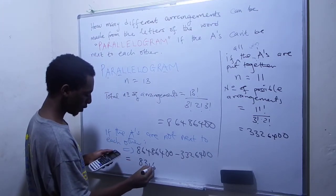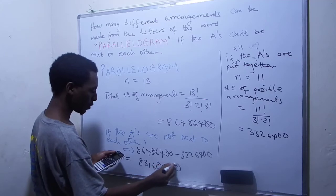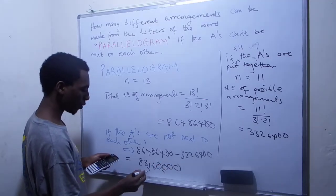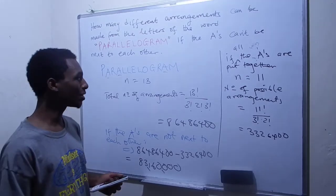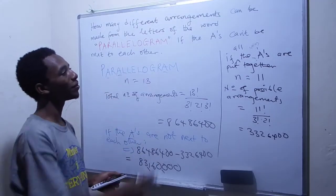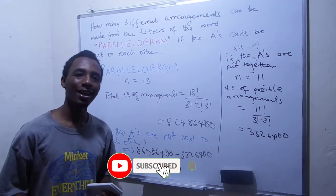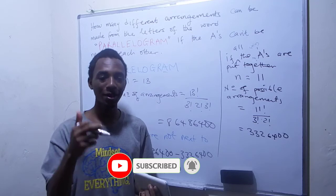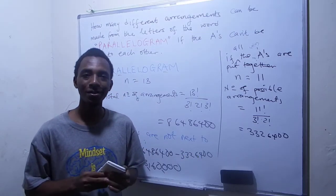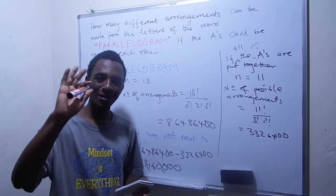Which is 8, 3, 1, 6, 0, 0, 0, 0. So there we go. That's 83,960,000 possible arrangements that we can make from this letter if the A's can't be together. Thanks for watching this video. If you find it helpful, give me a thumbs up. Subscribe to the channel if you haven't. And I'll see you in my next video. Bye.